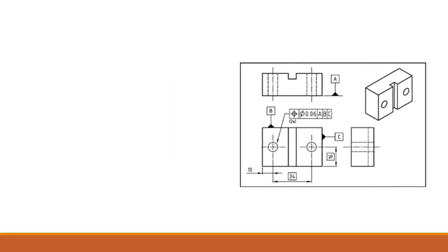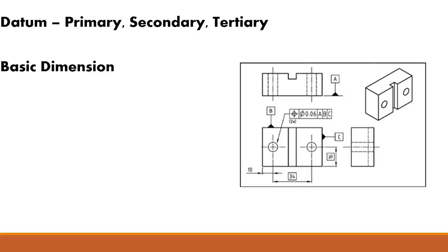We have this part — a fairly simple component. I use this in some of my classes because it is very basic but it still covers a lot of the essential aspects of GD&T. One of the things you want to start with is understanding the whole concept of a datum. A datum is simply a starting point or a measuring point that you're going to start from — a zero point on a feature from which you'll take all your other measurements. Typically you have a primary, secondary, and tertiary datum.